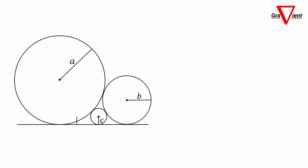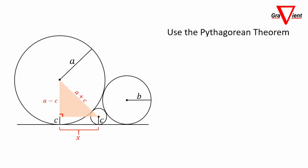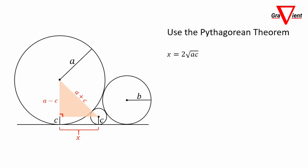Connect the center point of the circle of radius A to the circle of radius C. Make a right triangle with base X. The hypotenuse is A plus C and the other side is A minus C. With the Pythagorean theorem, X squared equals (A plus C) squared minus (A minus C) squared. With a little algebra, we get X equals 2 times the square root of AC.